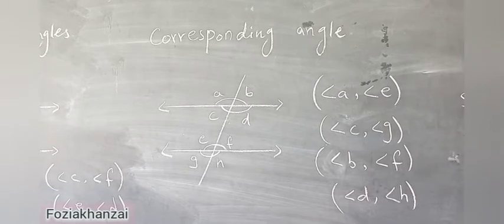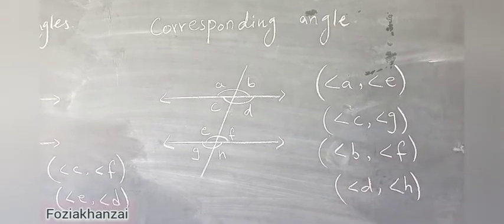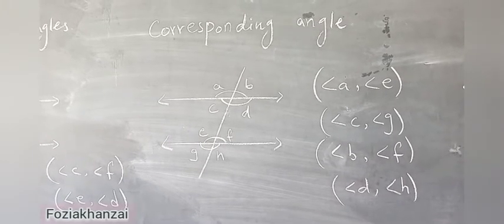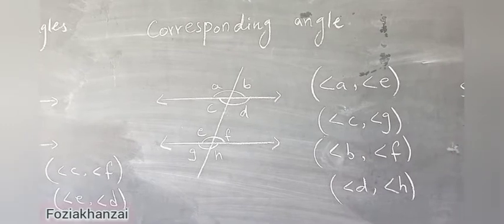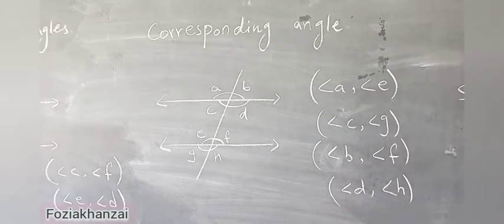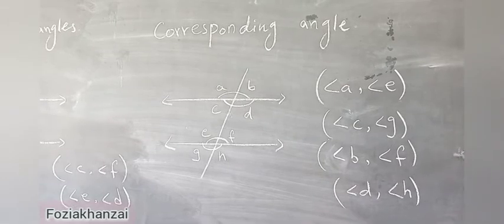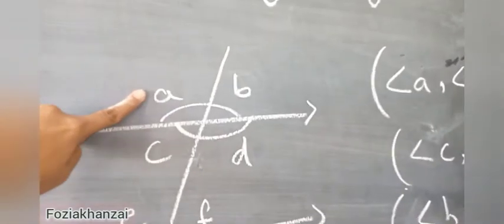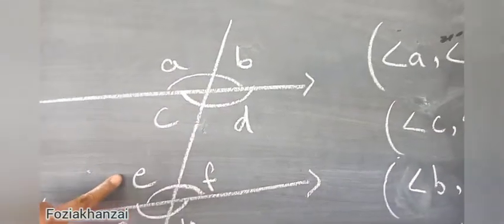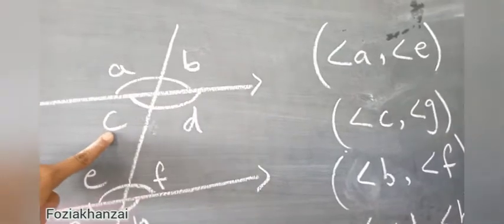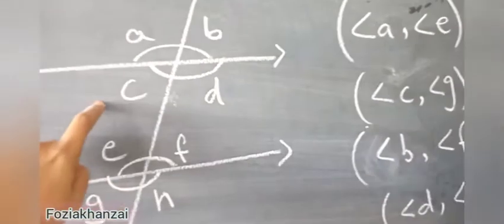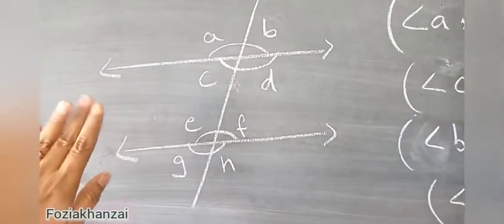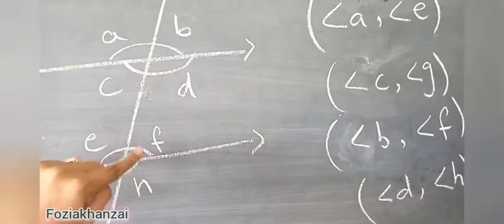Corresponding angles are those angles which lie on the same side of the transversal line — one angle is interior and the other is exterior. For example, angle A and angle E are both corresponding angles. Angle A is an exterior angle and angle E is an interior angle. Similarly, angle C and angle G are on the same side of the transversal line.